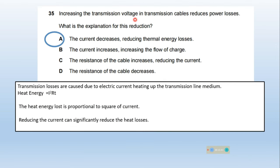Increasing the transmission voltage in transmission cables reduces power losses. What is the explanation? Transmission losses are caused by electric current heating up the transmission line. Heat energy equals I squared RT, so heat loss is proportional to square of current. Reducing current can significantly reduce heat losses. Option A is correct.